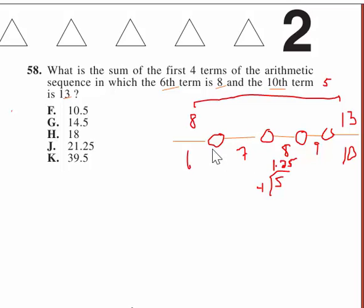So we know the next number up would have to be 8 plus 1.25, which would be 9.25. But we don't care about these numbers. They're asking for the sum of the first four terms, so we're going to have to go backwards.